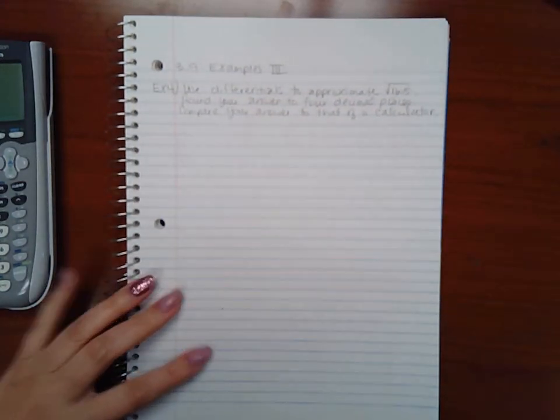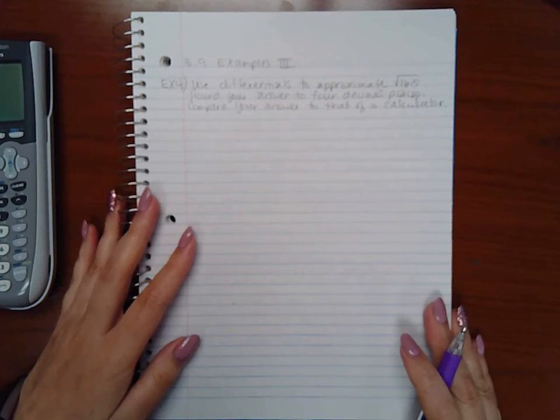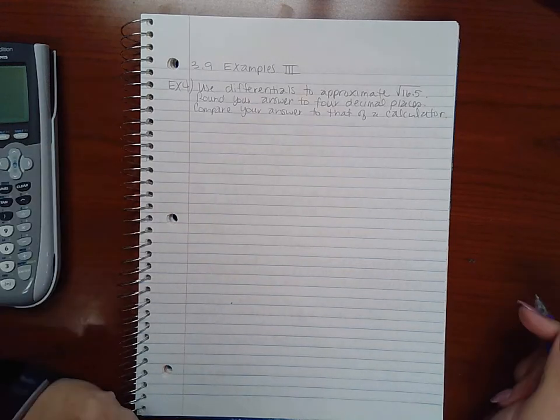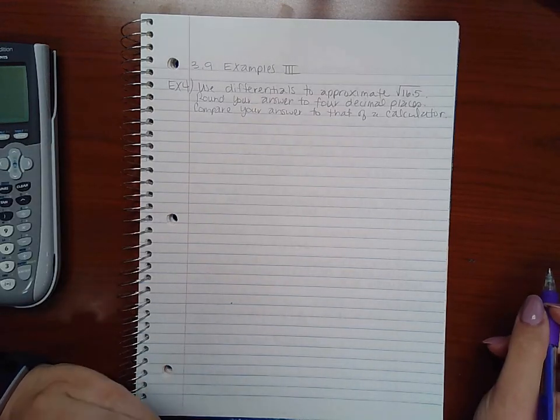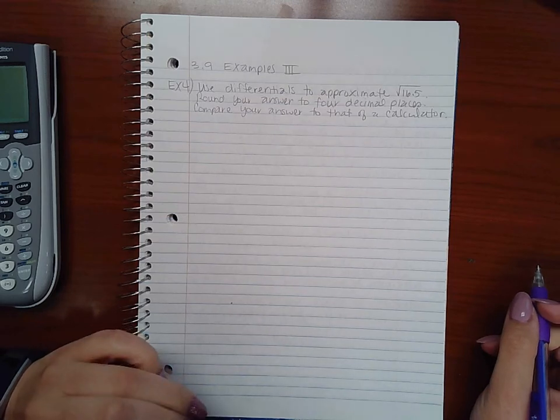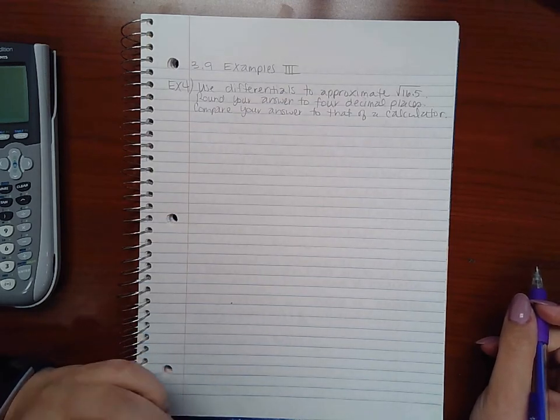In this video we will be doing example 4 from section 3.9. It says use differentials to approximate the square root of 16.5, round your answer to four decimal places and compare your answer to that of a calculator.